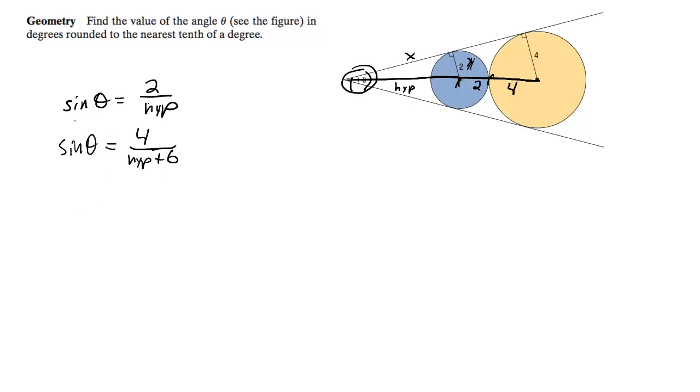We set these two equations equal to each other, so the sines, thetas, you can just get rid of those, so it ends up becoming 4 over hypotenuse plus 6 is equal to 2 over hypotenuse.